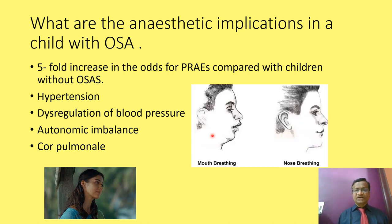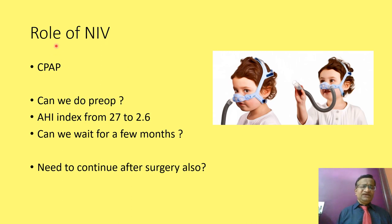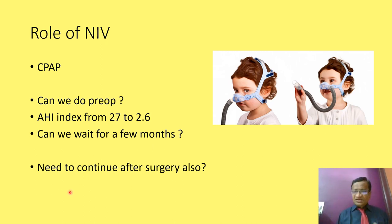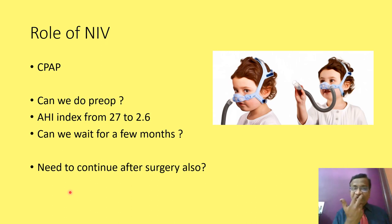We can differentiate a good-prognosis patient from a severe OSAS patient. The role of NIV: CPAP can be used, and the AHI may come down from 27 to 2.6 over a few months. However, since OSA is caused by adenotonsillar hypertrophy, unless you perform the adenotonsillectomy the OSA will not be corrected — NIV is not a cure.